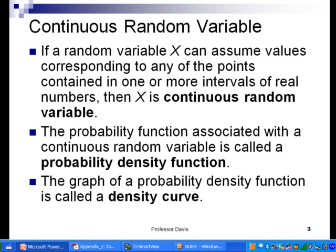In slide number three, we can see that if a random variable x can assume values corresponding to any of the points contained in an interval, then x is a continuous random variable. This means we can put in any real number we want—fractions, irrational numbers, it doesn't matter.